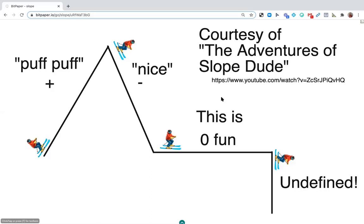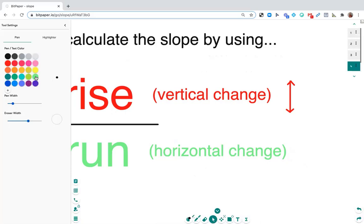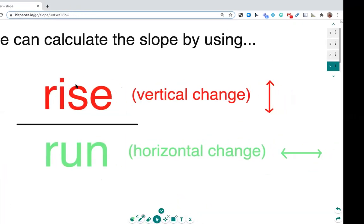But now we're actually going to talk about how do we calculate slope on a coordinate plane. So the easiest way when given a graph or a line on a coordinate plane is to use the formula of rise over run. So what that means is I'm going to calculate the slope by doing the vertical change divided by the horizontal change. So let's look at a few examples on a coordinate plane.